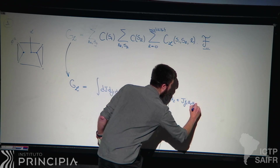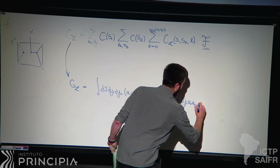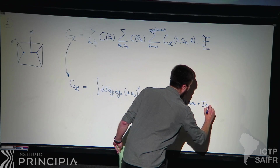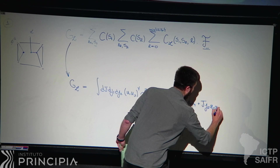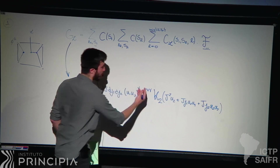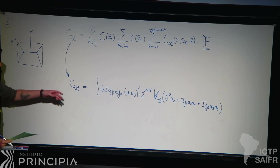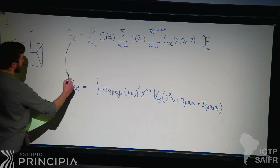This very complicated conformal block, which is some complicated combination of hypergeometric functions, becomes a Bessel function in the null square limit. That's one of the outcomes, and it's very simple — that's how we can treat all this stuff analytically.